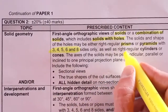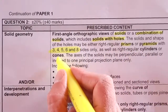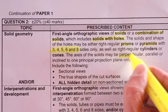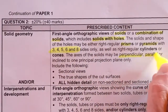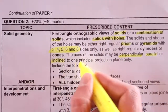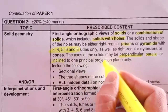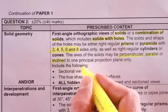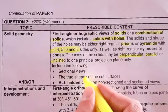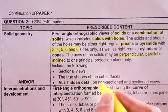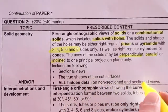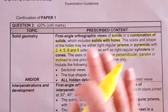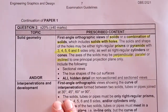They may also be right regular cylinders or cones. The axis of the solids may be perpendicular to each other, parallel, or even inclined to one principal projection plane only. Include the following sectional views: the true shape of the cut surface, all in detail and non-section sections. Let's look at last year's question before we go to interpenetration in the second half of this video.